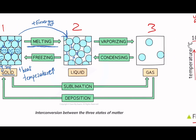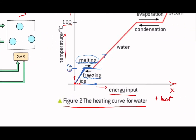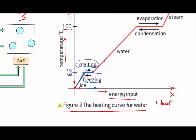Now we're in liquid state. We go back to our graph — we're here at point two. Then we increase the energy again, so the temperature is increasing as well. We increase it from zero degrees, now we're at like 50 degrees, 60, then 80. And then we reach 100 degrees Celsius. And we hit another plateau — energy is increasing but the temperature is stable. It's not changing.